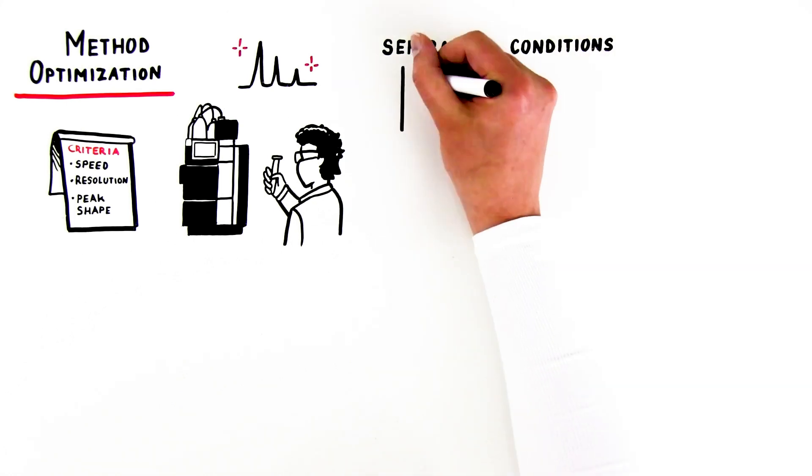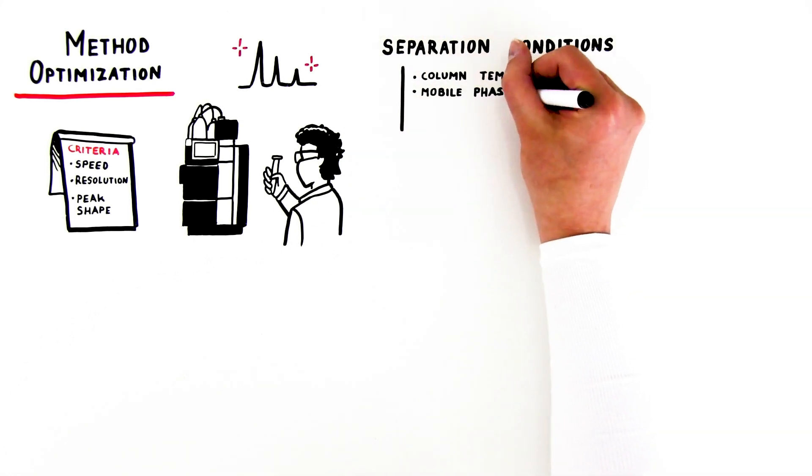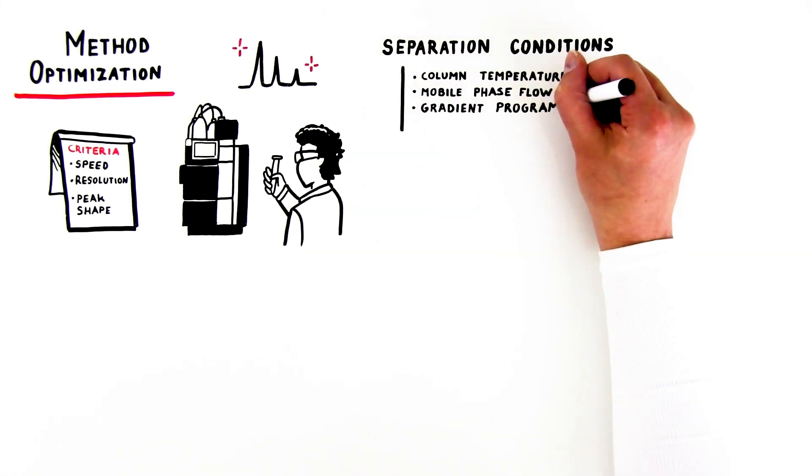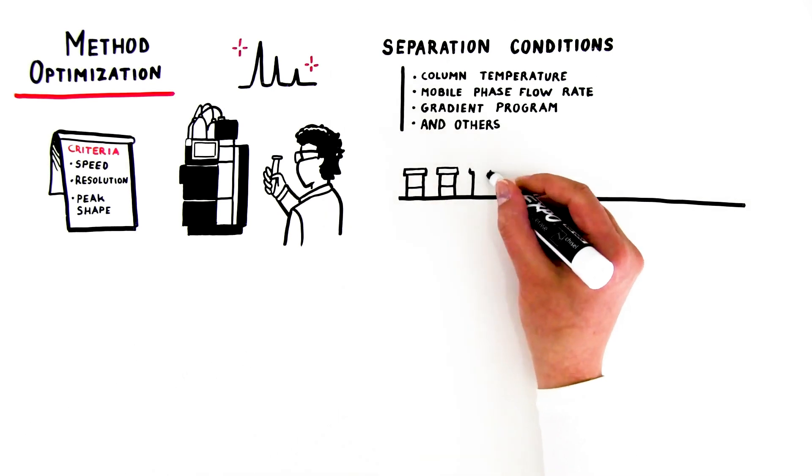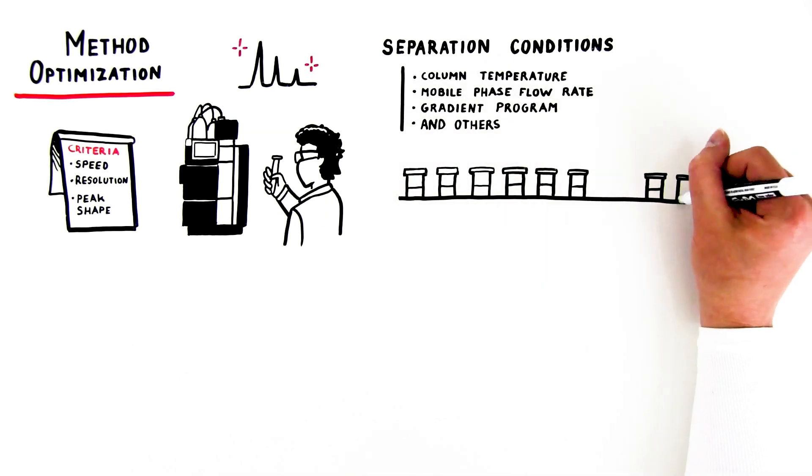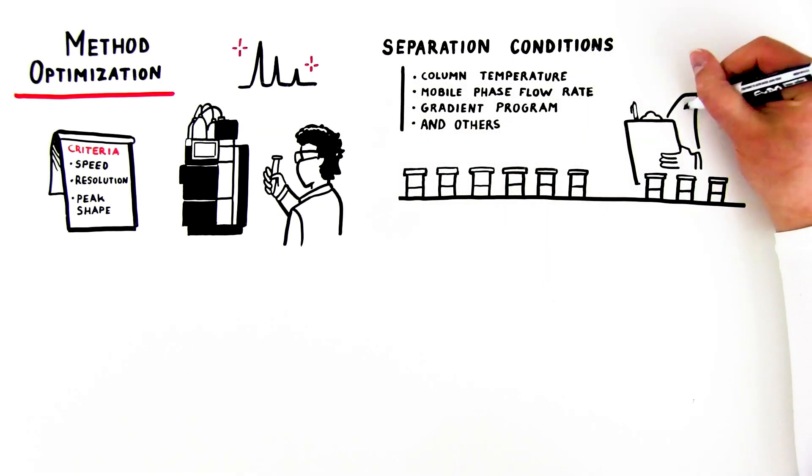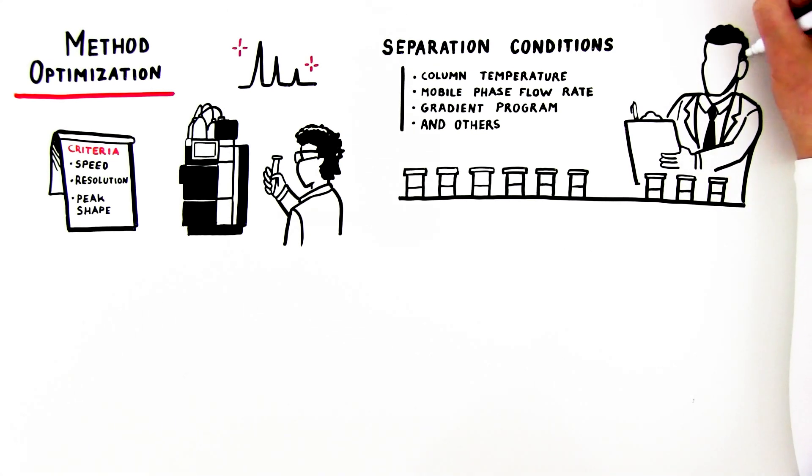Separation conditions include column temperature, mobile phase flow rate, gradient program, and others. This stage requires operators to run large numbers of samples and repeatedly make decisions based on each set of results, making method optimization laborious even for seasoned veterans.